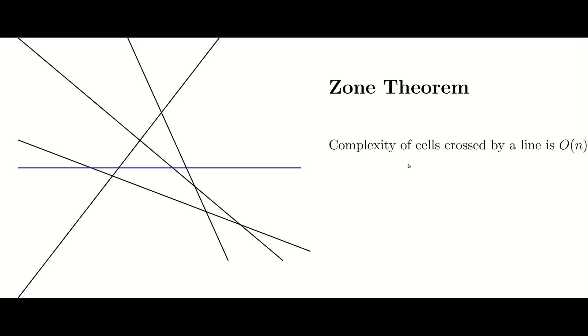We now look at a very important theorem in high-dimensional geometry called the zone theorem. We first investigate this theorem in two dimensions. In two dimensions, the theorem says the following.